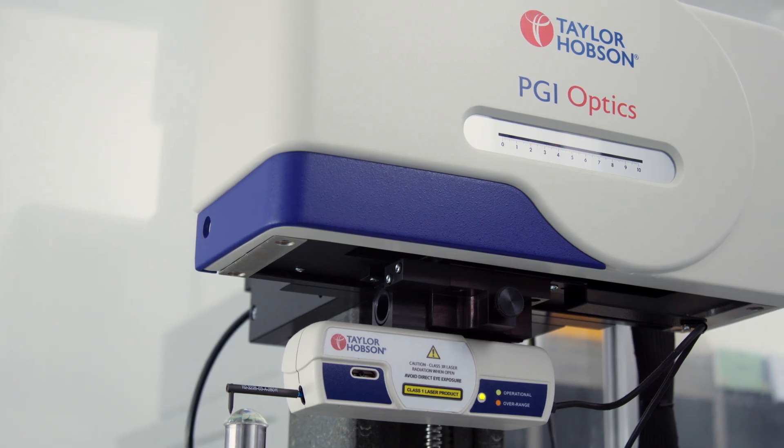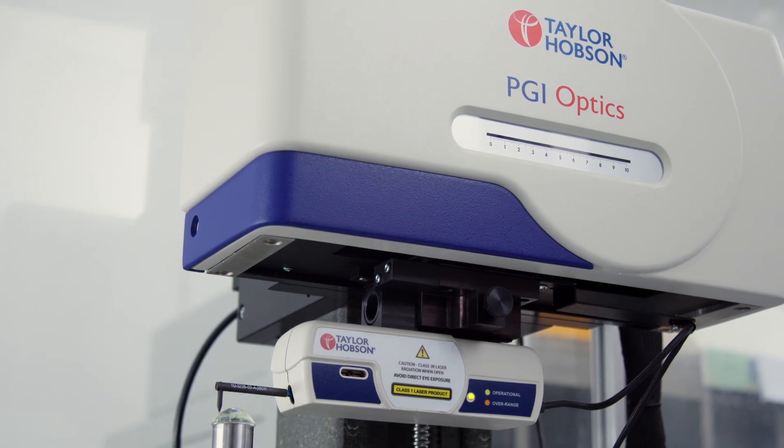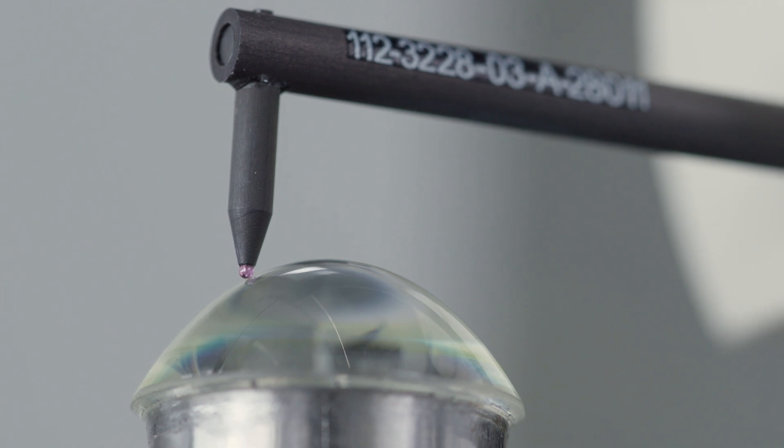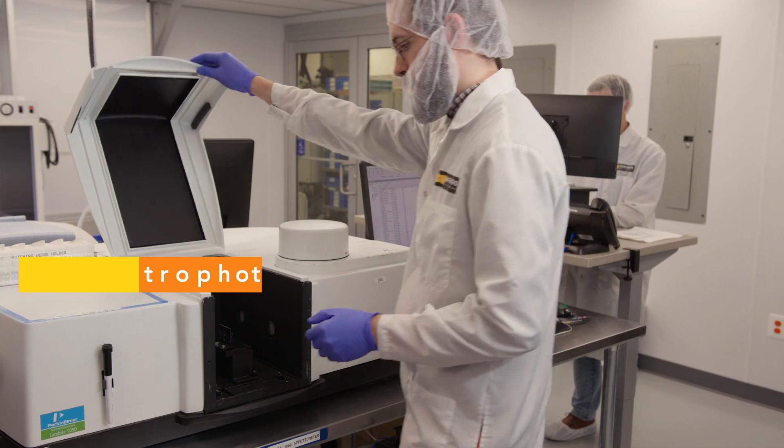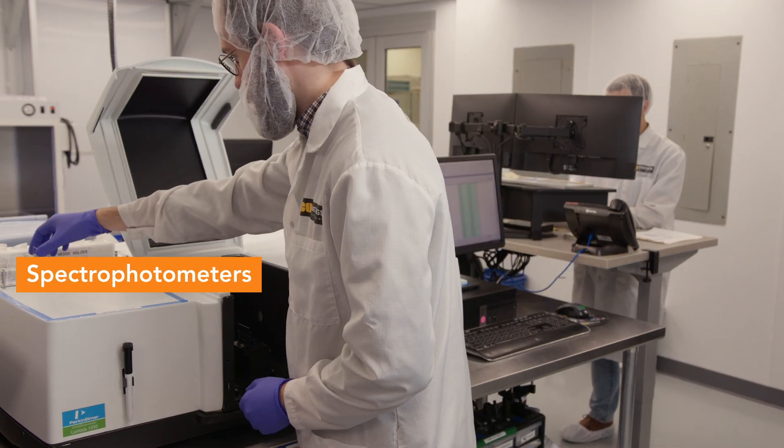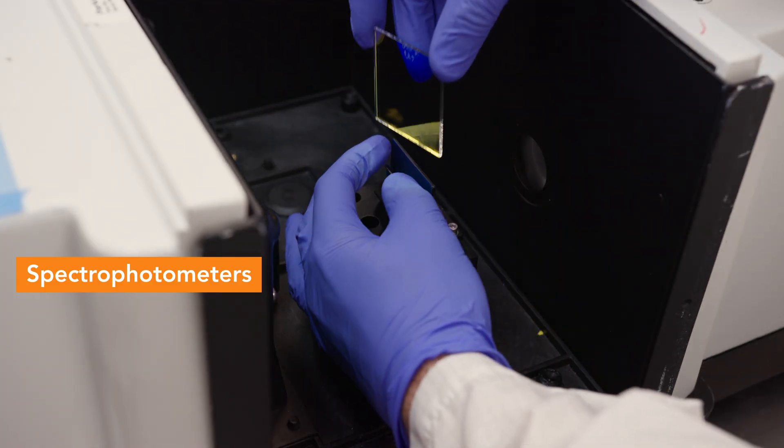Profilometers have few limitations on the types of shapes they can measure, making them ideal for aspheric lens metrology. The reflective and transmissive spectral properties of optical coatings are verified through spectrophotometry.